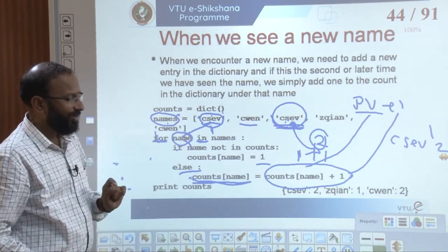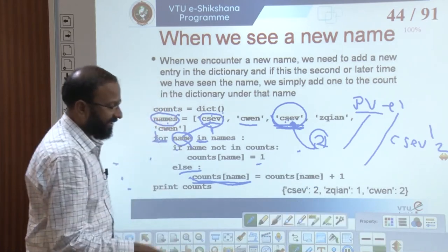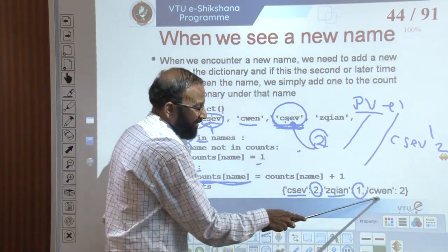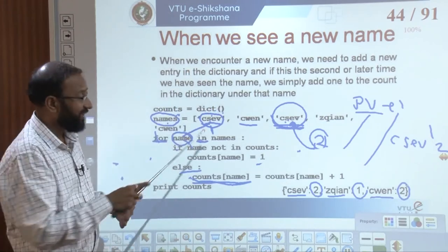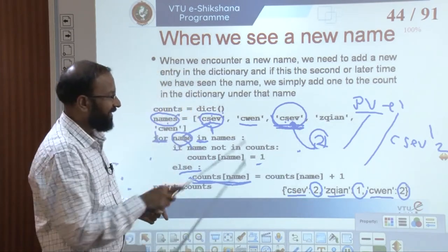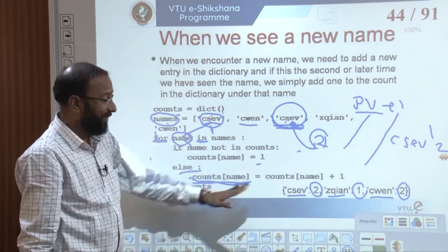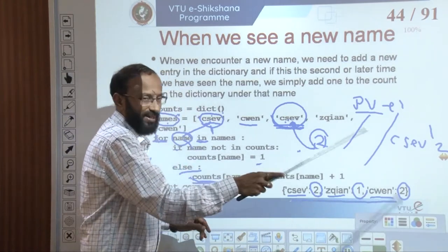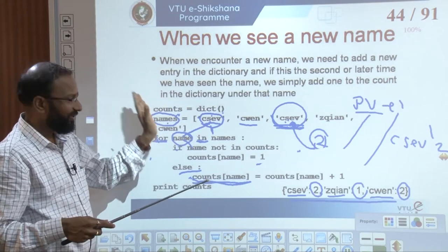This solution can be extended to a real-world scenario. Instead of a hardcoded list, data can come from a file. In real life, the number of words may come from a file, but the core logic remains the same. We open the file, read each line, split the line into individual words using line.split() — with no parameter so the delimiter is a blank space — and then apply the same counting logic.